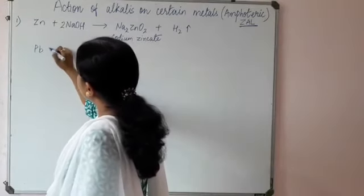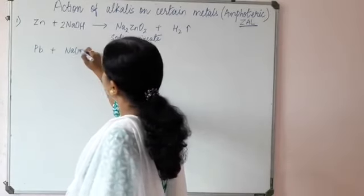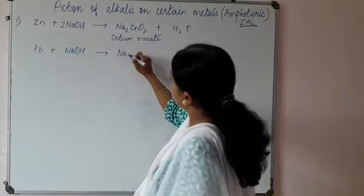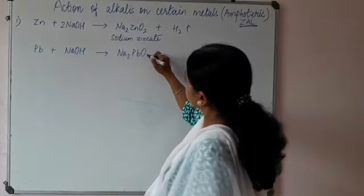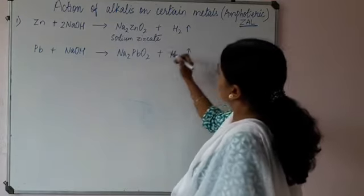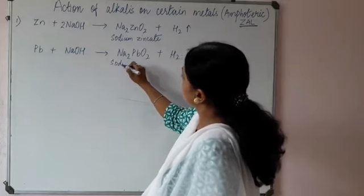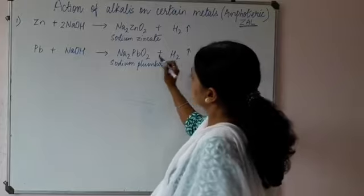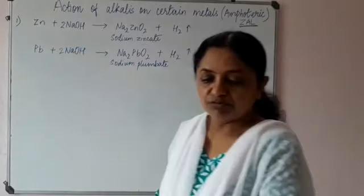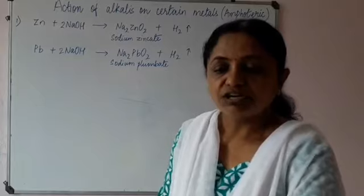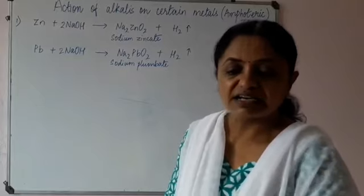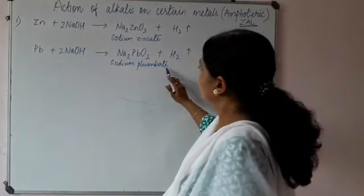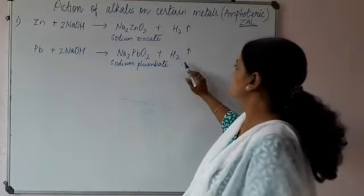Next is lead. When lead reacts with NaOH, we get sodium plumbate (Na₂PbO₂) plus hydrogen gas. So Na₂PbO₂ is sodium plumbate. We have to balance the reaction, and the same observation of hydrogen gas will be there. All these reactions are with hot and concentrated alkali.